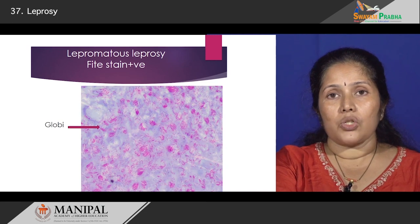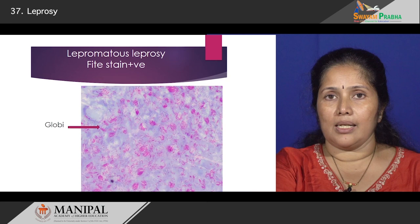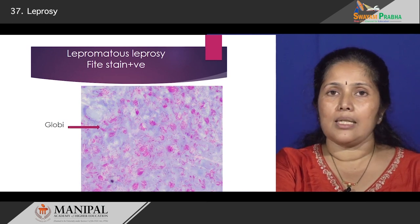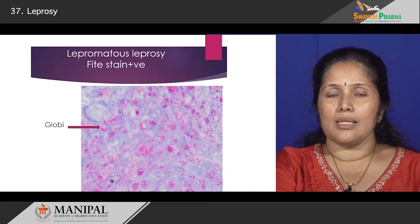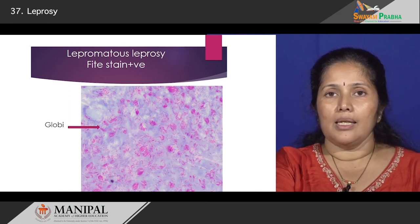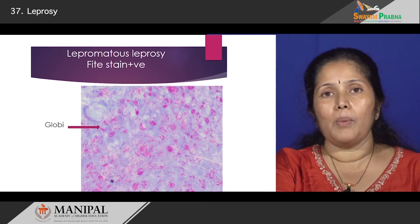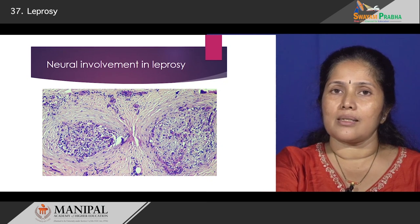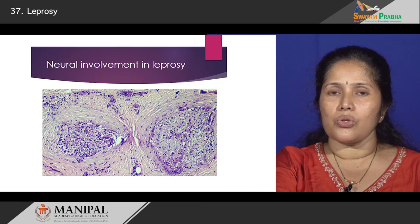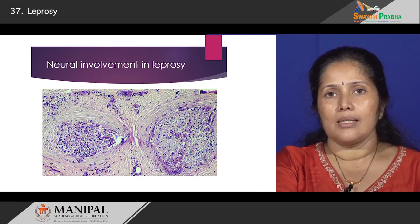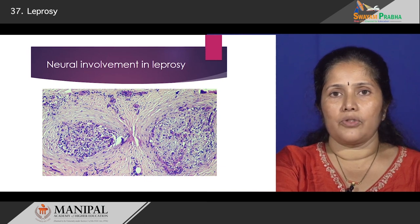Here is a picture which shows the special stain known as the Fite stain, which is positive in the lepromatous end of the spectrum. In this picture you can see that the histiocytes or macrophages are completely filled with bundles of these bacilli stained pink. You can see these linear pink-stained bacilli in groups, and each of these groups is known as globi. There is also a lot of neural involvement — the nerve bundles are expanded and you can see inflammatory cells infiltrating into and causing thickening and enlargement of the nerve bundles.